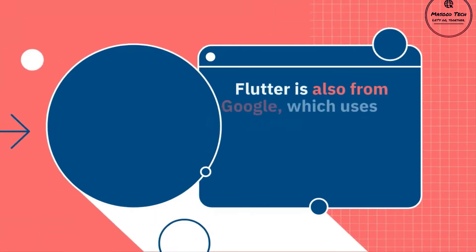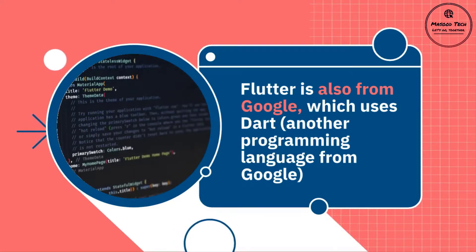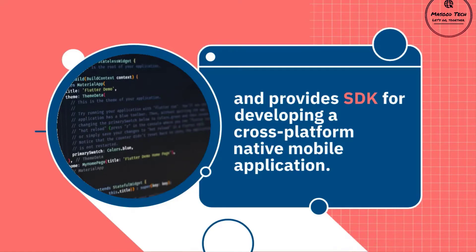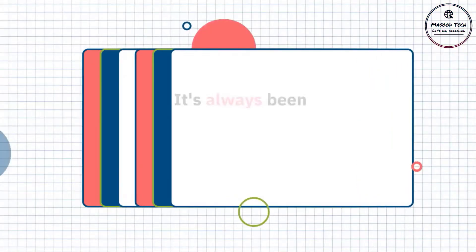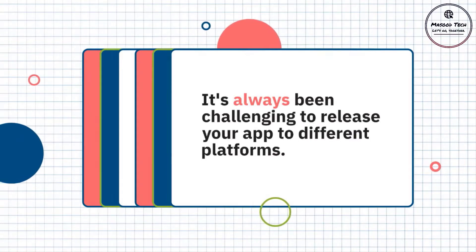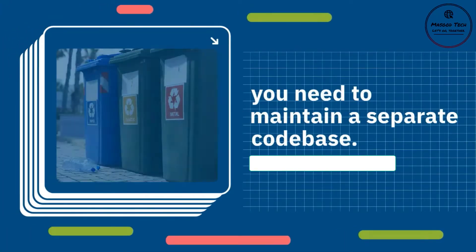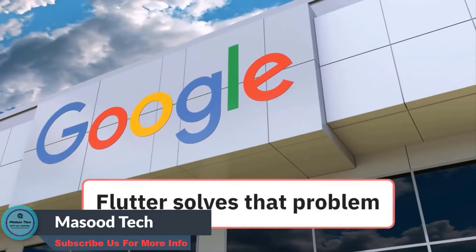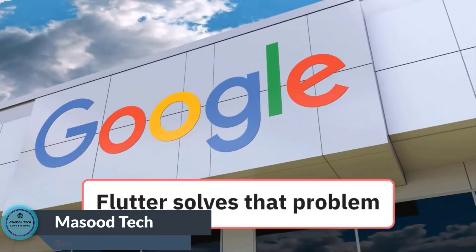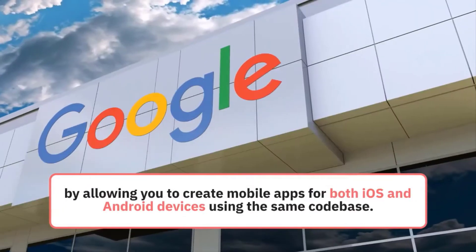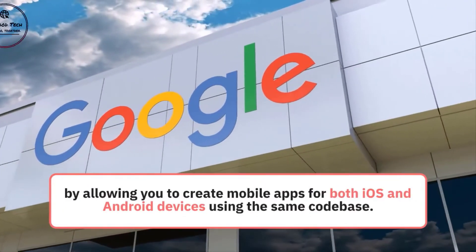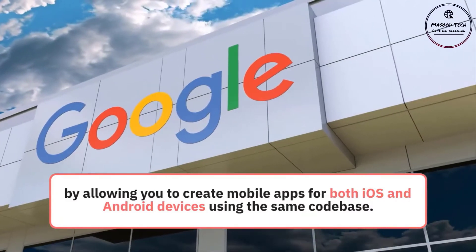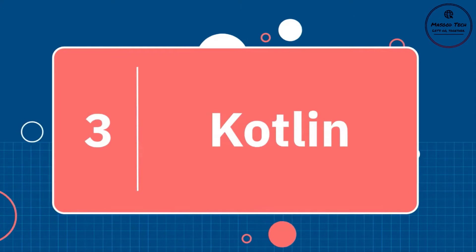Number two: Flutter. This is another excellent framework for developing cross-platform native mobile applications in 2022. Like Golang, TensorFlow, and Angular, Flutter is also from Google. It uses Dart, another programming language from Google, and provides an SDK for developing cross-platform native mobile applications. Flutter solves the challenge of maintaining separate code bases for different platforms like Android, iOS, and Windows Mobile, by allowing you to create apps for both iOS and Android using the same code base. Flutter has seen a lot of growth in the last two years and is now the number one framework for developing native mobile apps.